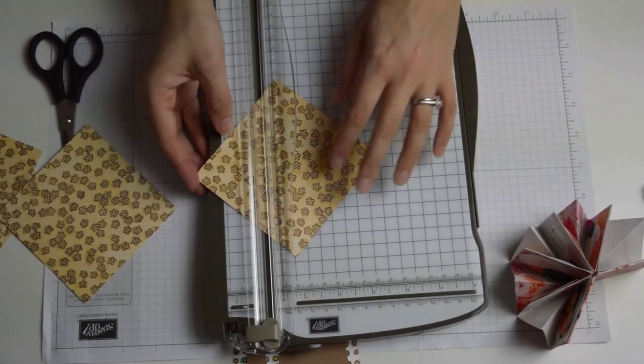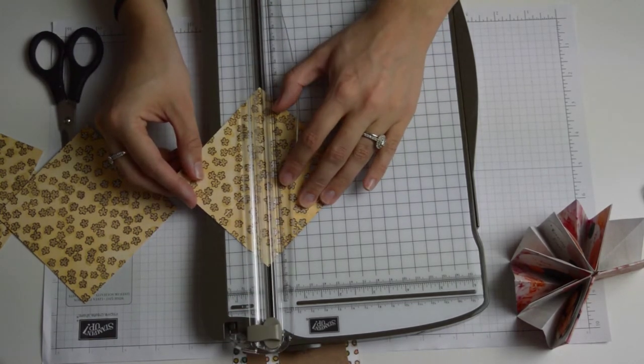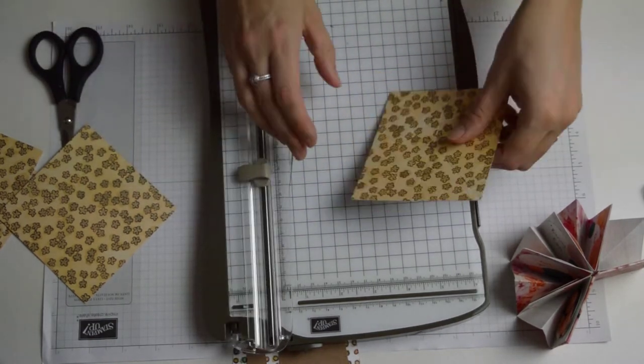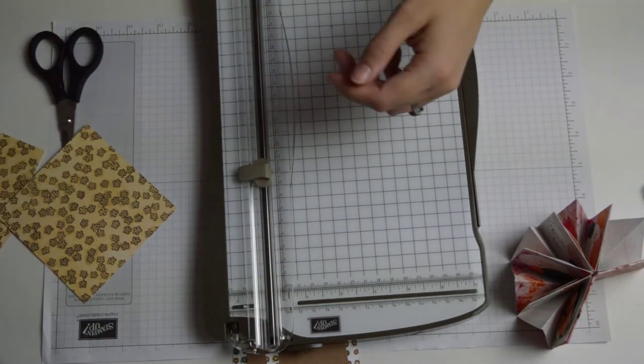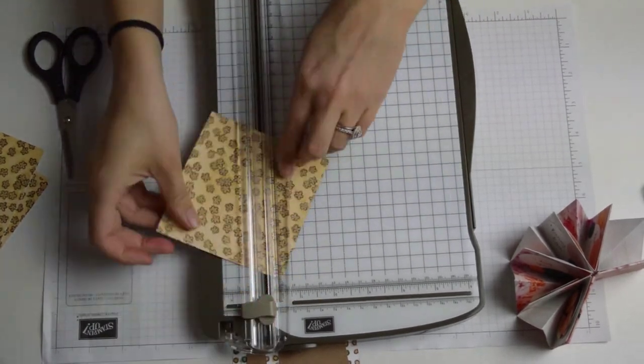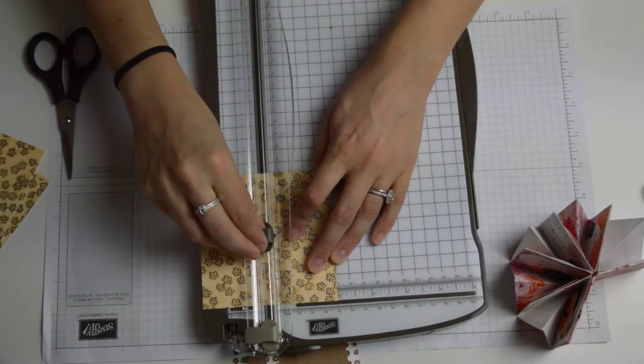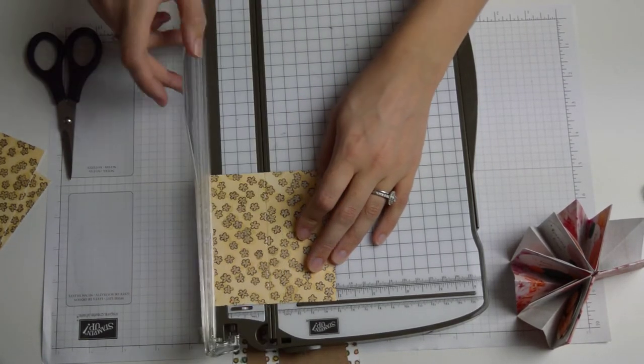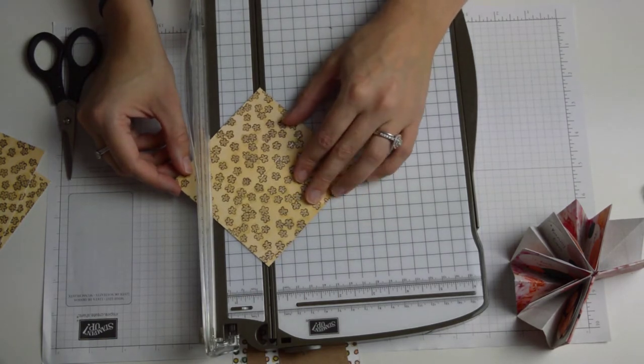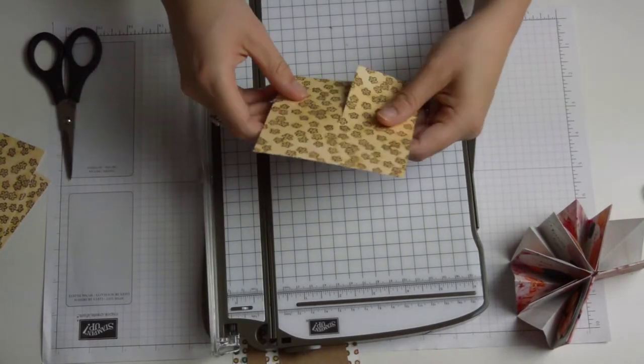To do this all I do is I line the point up with the point on the track of the trimmer I just follow it down to halfway. I'm just going to show you that again. Four by four score at two inches flip top score at two, cut down the bottom half, make it diagonal and give it a nice little score line as such.